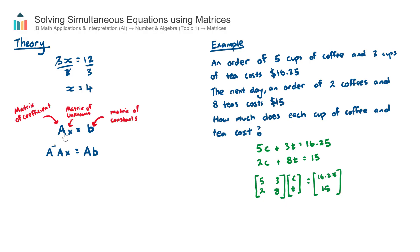To be clear about the notation: the capital letter A is the matrix of coefficients — in our example, the 2×2 matrix containing 5, 3, 2, 8, representing the number of cups of coffee and tea. The lowercase x is the matrix of unknowns, meaning the variables we are trying to find — here C and T for the price of one cup of coffee and tea. The lowercase b is the matrix of constants, which represents the total price for each purchase on each day.